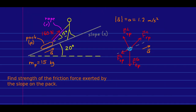Here is an example: a hiker using a rope to pull their pack up a slope. The rope makes an angle of 15 degrees relative to the slope, and the slope is 20 degrees above the horizontal. The hiker is pulling with a force of 160 newtons, and the pack is accelerating up the slope at 1.2 meters per second squared. The free body diagram for the pack shows the gravitational force, a perpendicular force, kinetic friction due to the slope, and the force the rope is exerting on the pack. We want to find the strength of the friction force exerted by the slope on the pack. I should first define axes — I'll point my x-axis up the slope and my y-axis perpendicular to the slope, since the acceleration points up the slope.